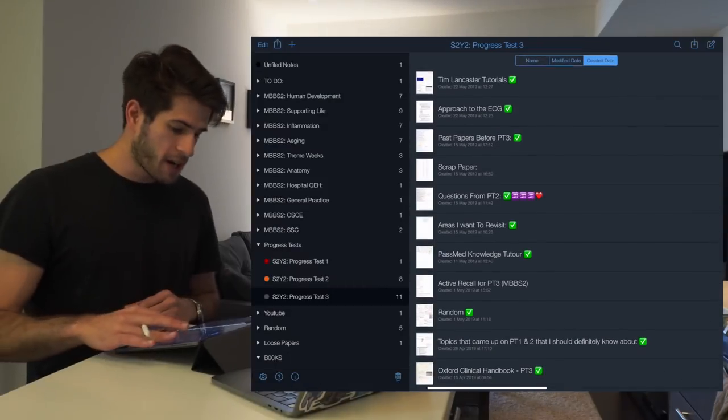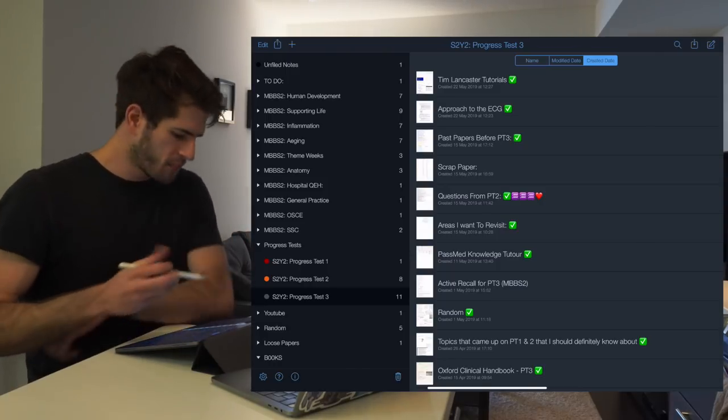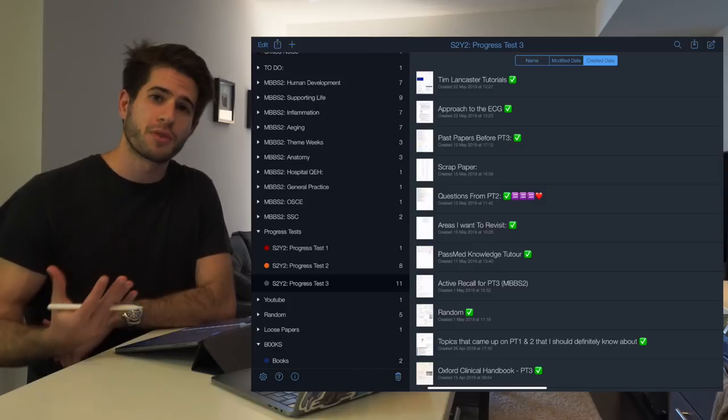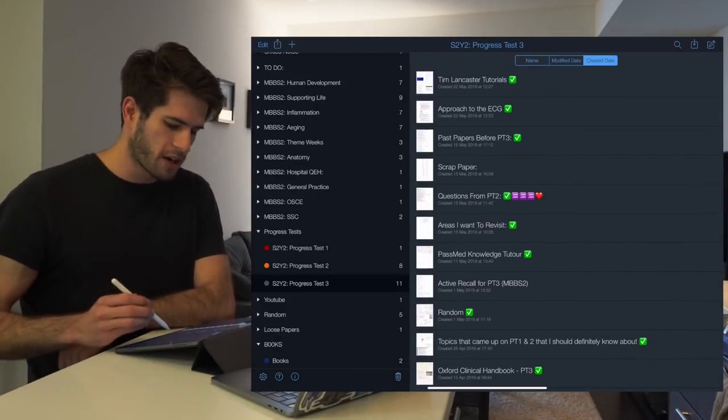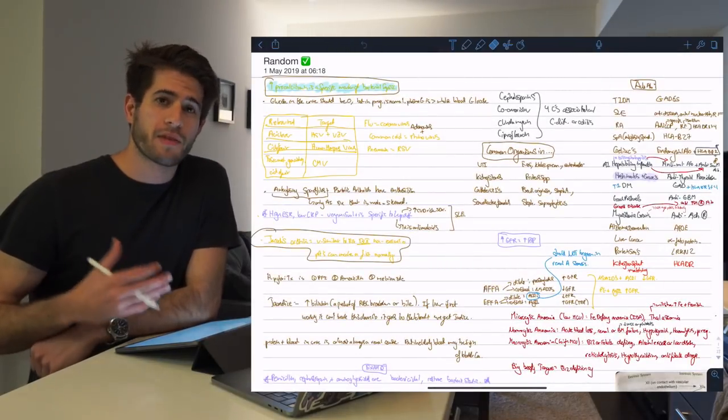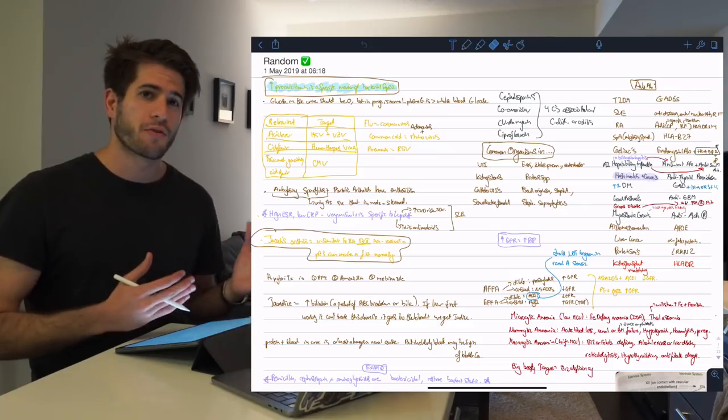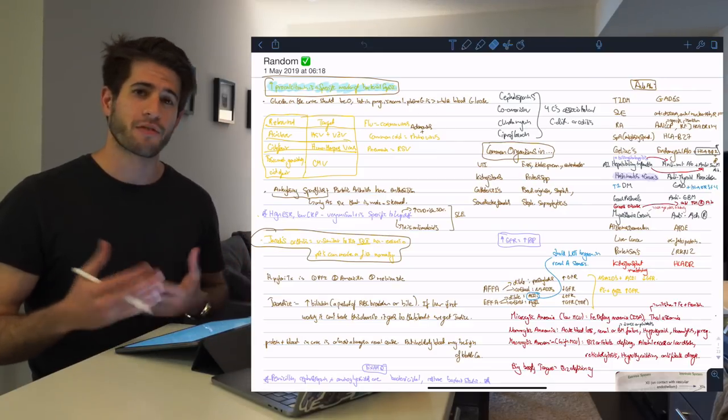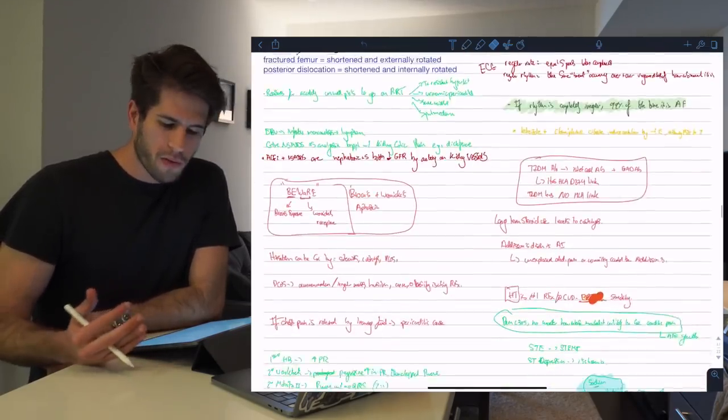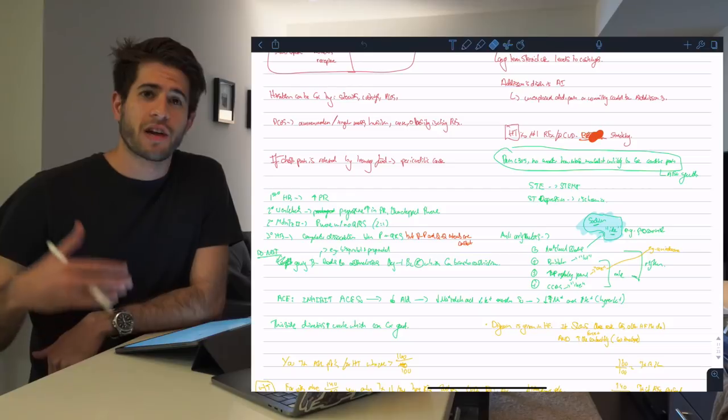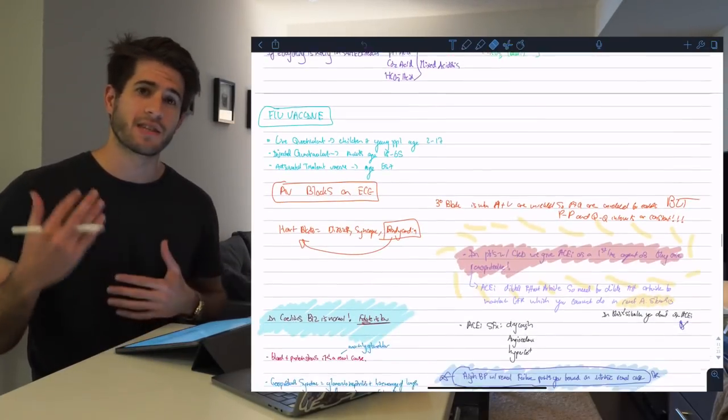Here on my iPad this is Notability which is the app I use to organize all my lecture notes at university. Over here on the left you can see progress test 3 which was the most recent exam I wrote at medical school. Then over here I created a document called random which was basically a list of random facts I just needed to memorize, things I just couldn't understand or there was nothing to understand I just had to remember these different relationships. This is a very long document and I've figured out a couple techniques to make memorization like this easier.